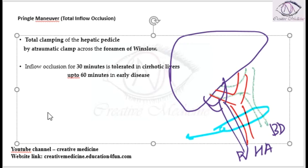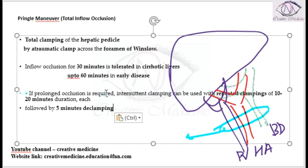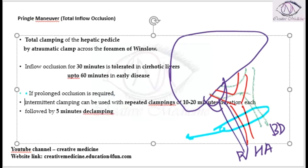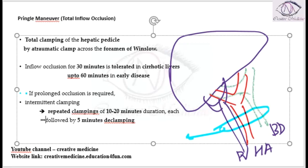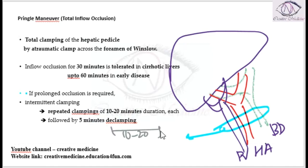If prolonged clamping is required due to the surgery, in such cases, we have to do intermittent clamping. In intermittent clamping, you do repeated clamping with duration of 10 to 20 minutes each and this is actually followed by a period of declamping of 5 minutes. Every 5 minutes, you should do declamping. First you can clamp it for 10 to 20 minutes duration followed by 5 minutes of declamping.